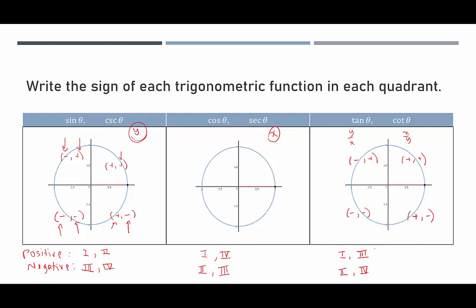It's important to know these signs. You can always figure them out by creating the triangle, but a helpful mnemonic is 'All Students Take Calculus': in quadrant one, All functions are positive; in quadrant two, only Sine is positive; in quadrant three, only Tangent is positive; in quadrant four, only Cosine is positive.